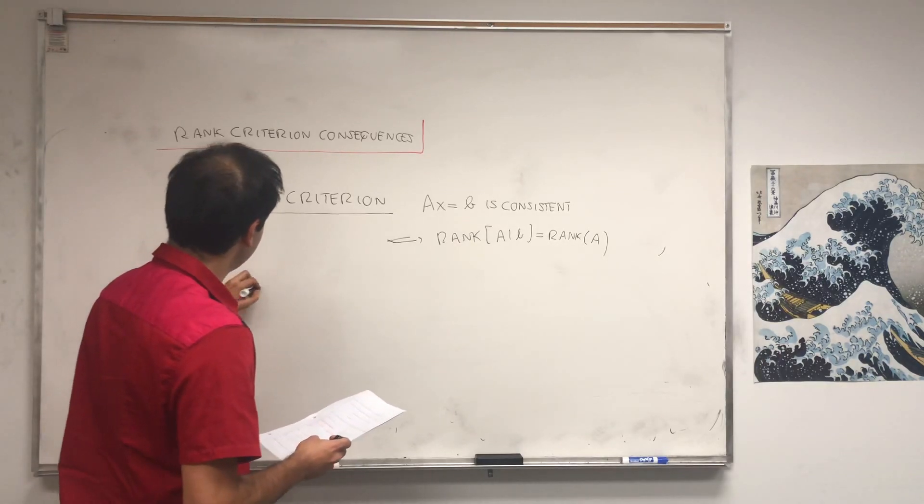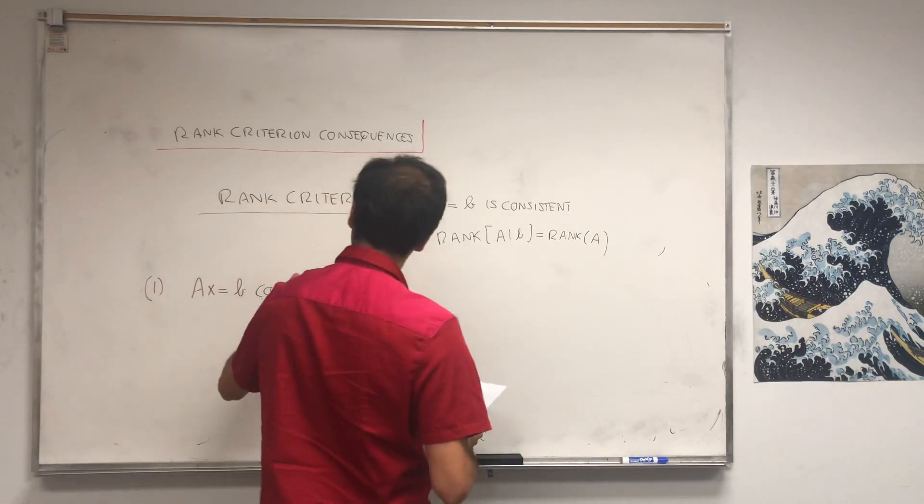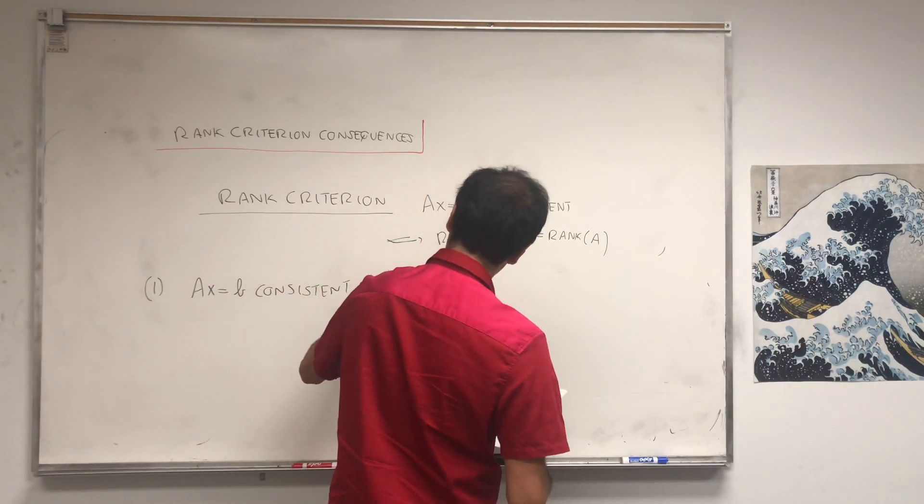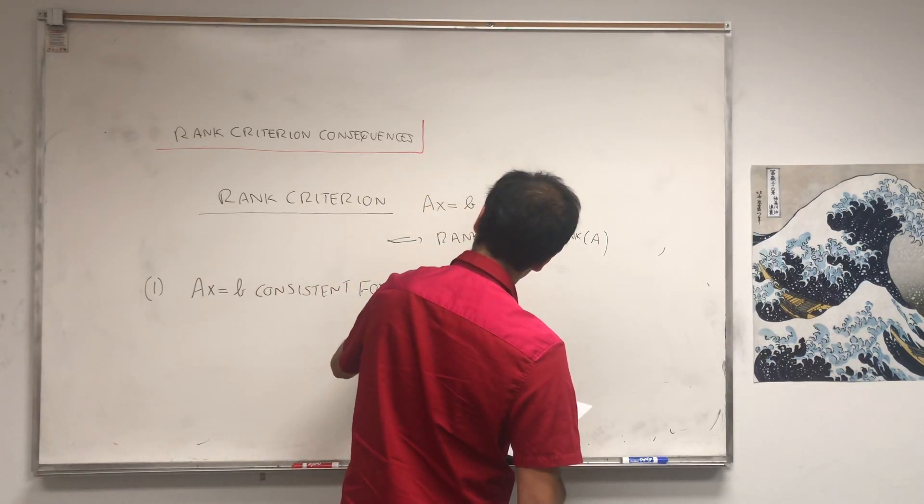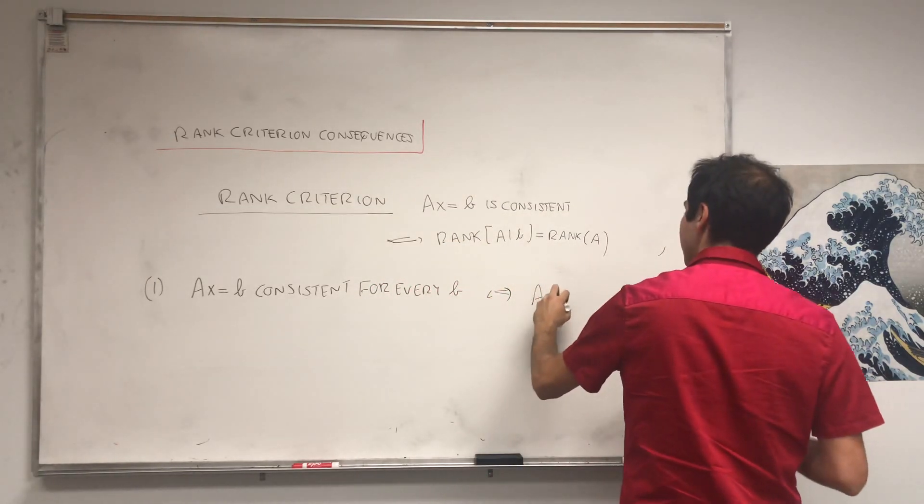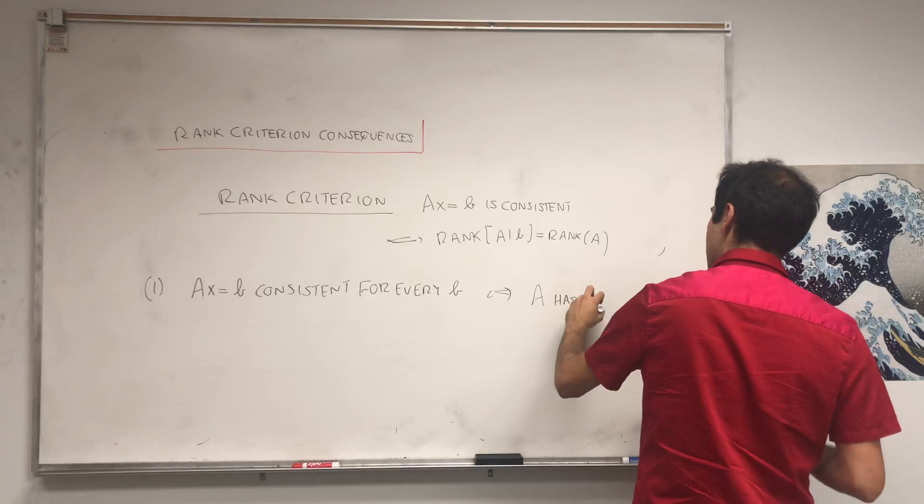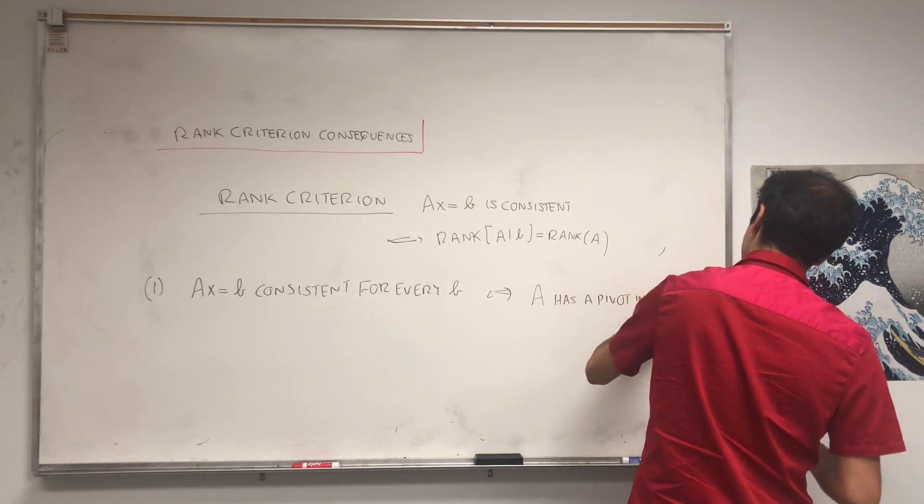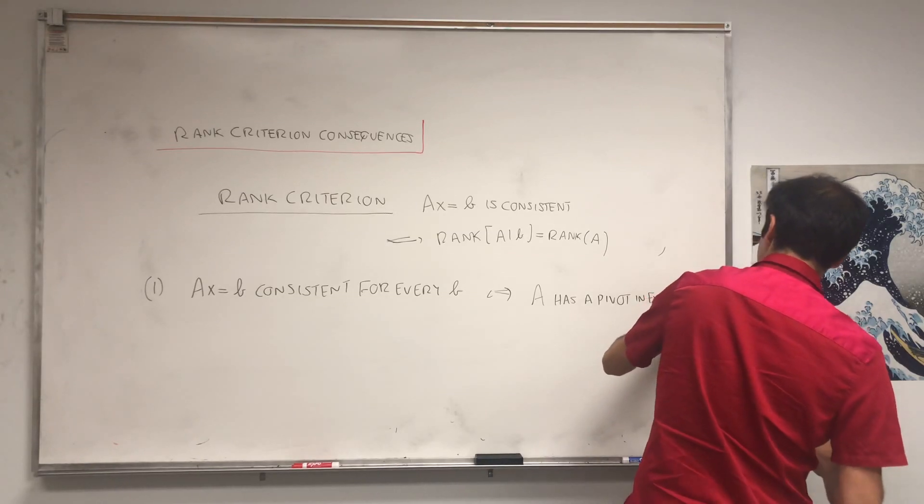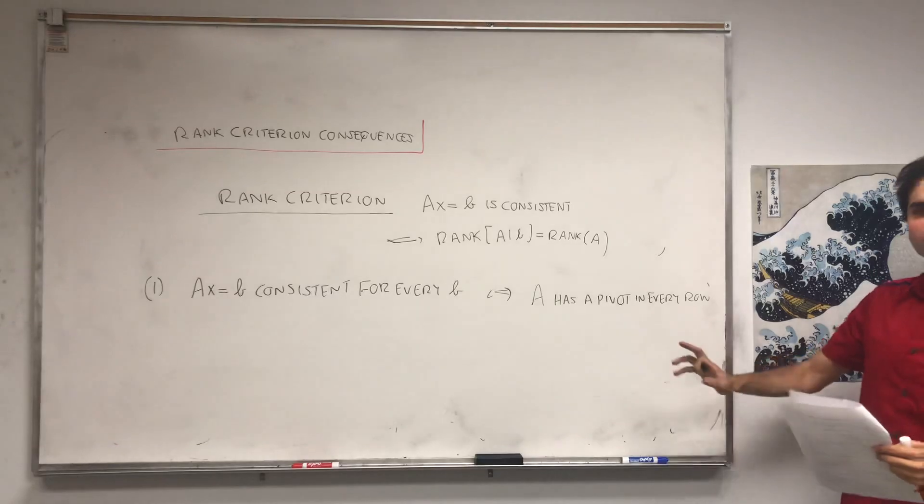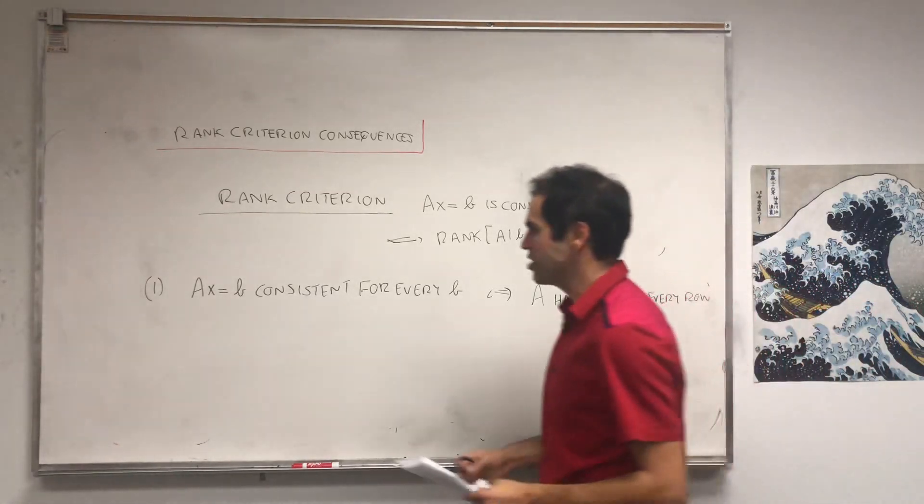Namely, AX equals B is consistent for every B if and only if A has a pivot in every row. And as I said, I'm sure you use this a lot in elementary linear algebra courses, but now we can prove this.